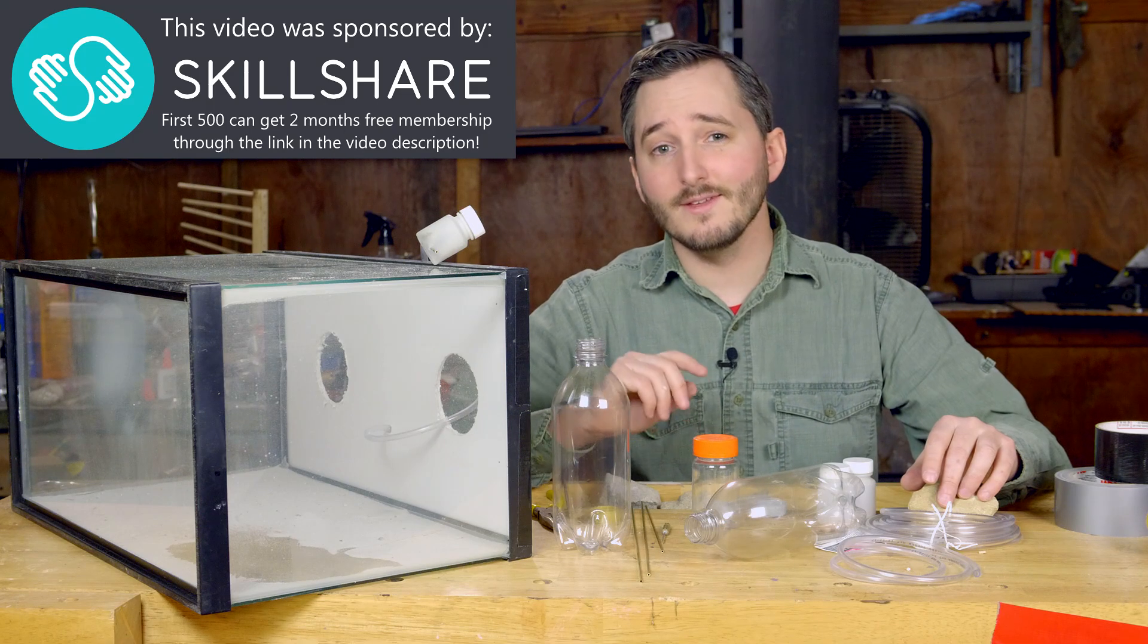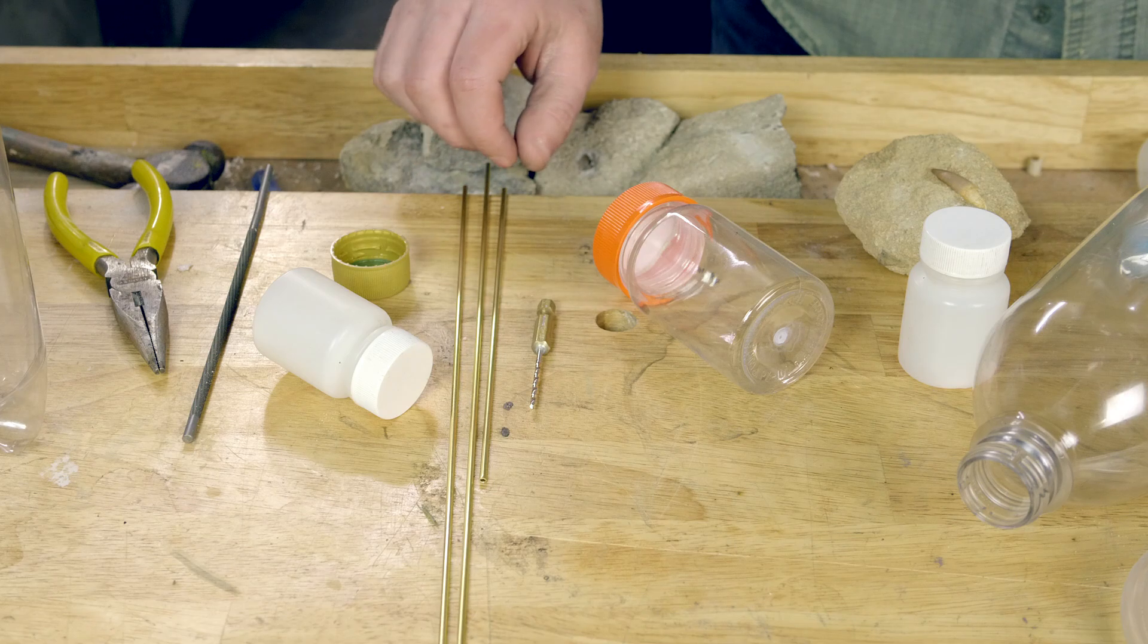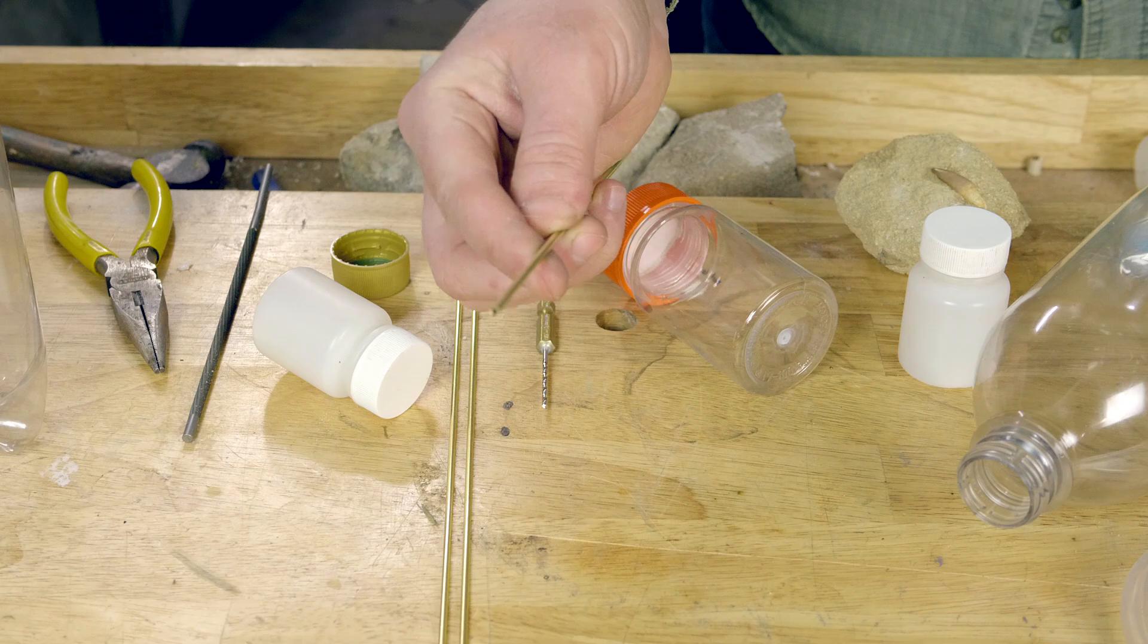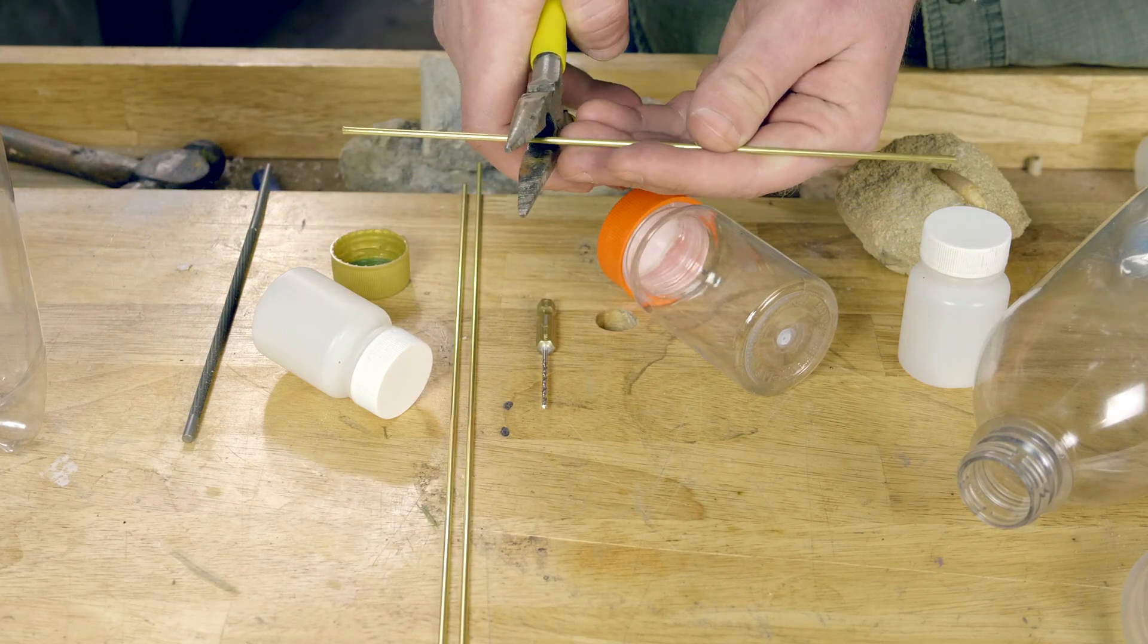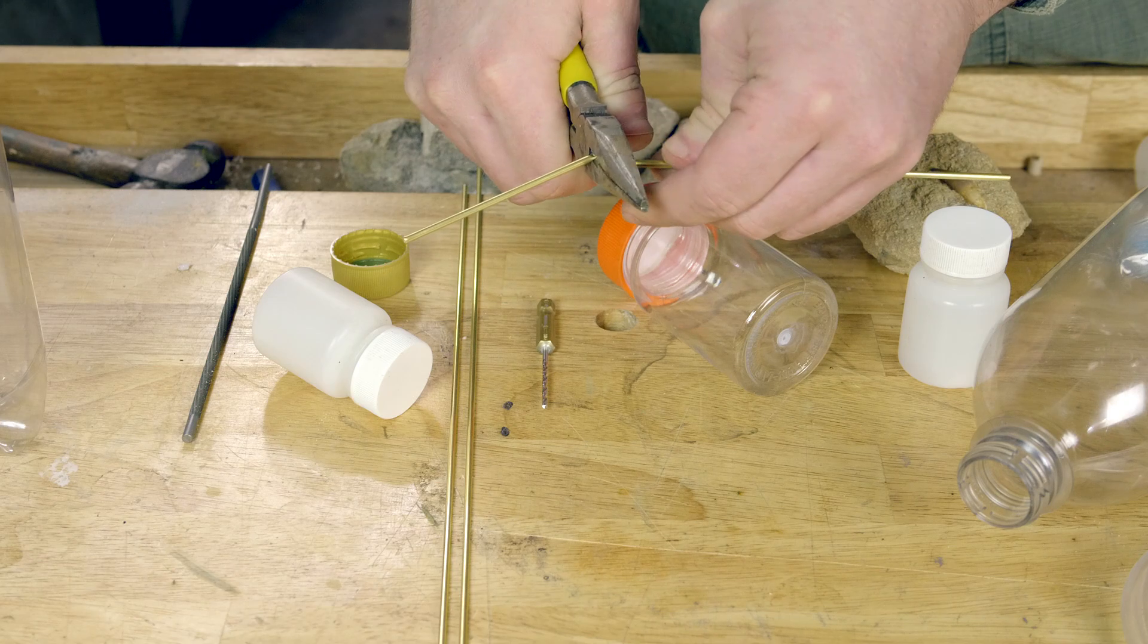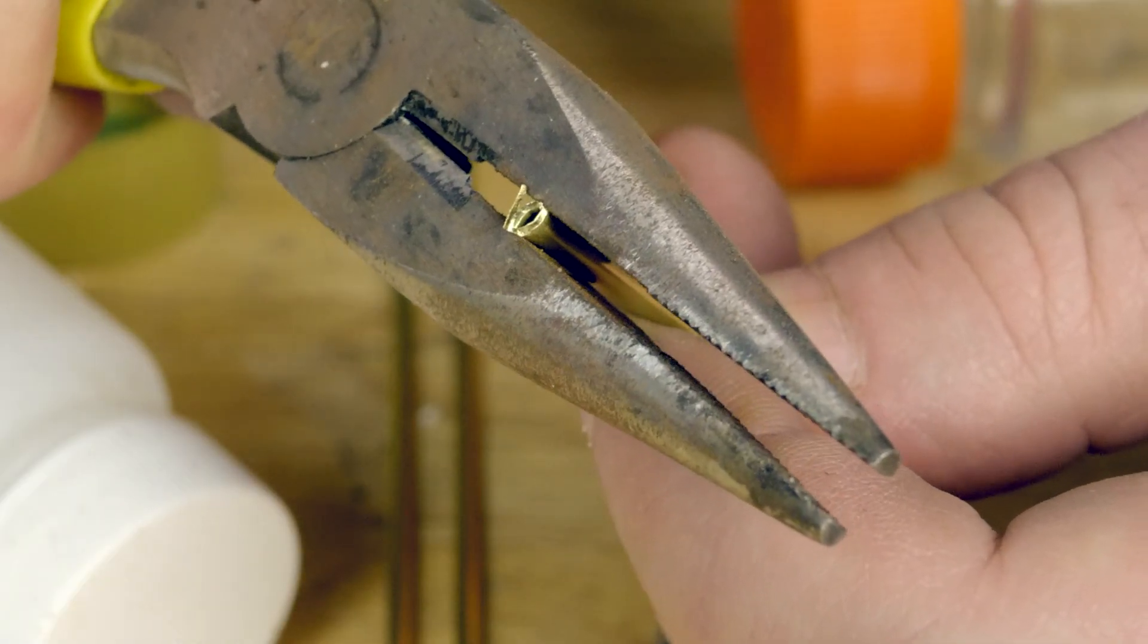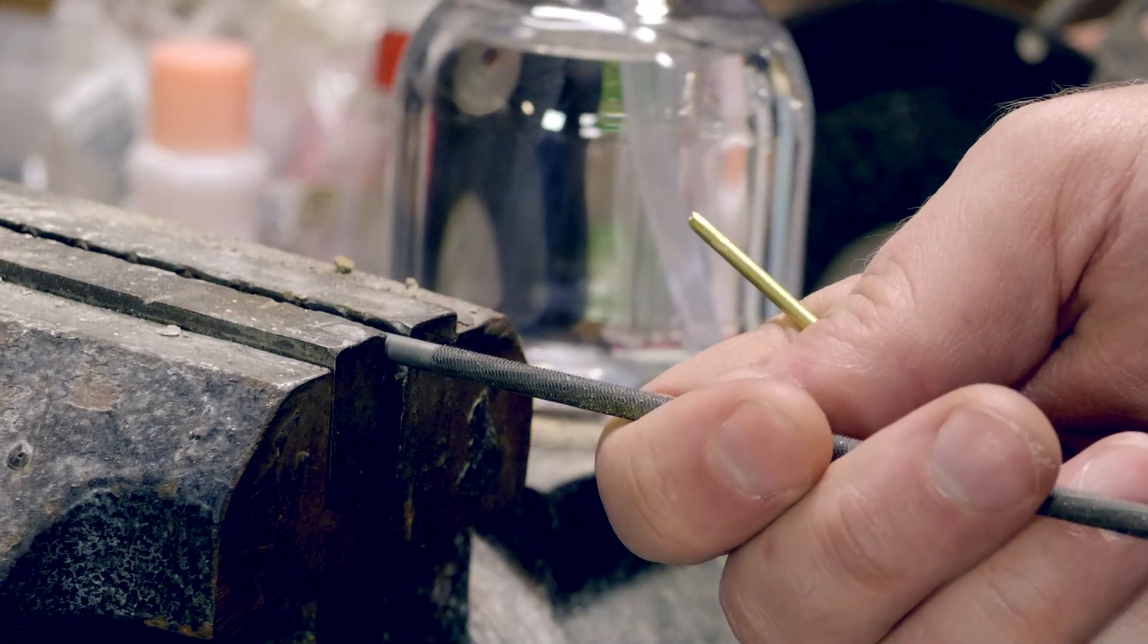The first item for this project is a small metal tube. You can find these brass tubes at most hardware stores, and I'll put the exact specifications in the video description below. A section about five inches or 12 centimeters long is snipped off, and if the end is crimped closed after being snipped, it should be opened up again by using a round file.